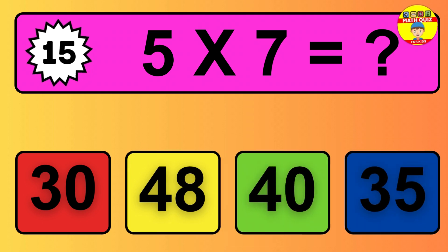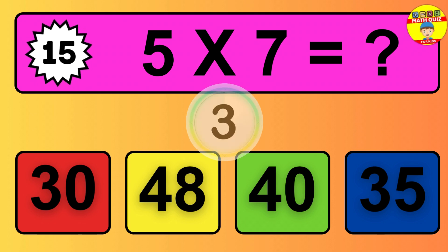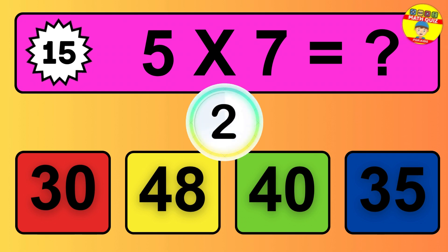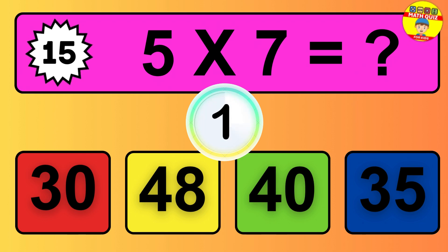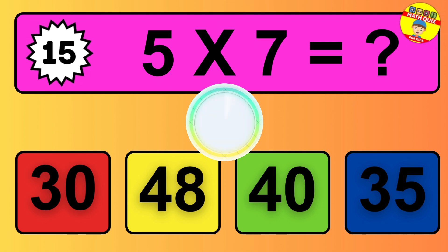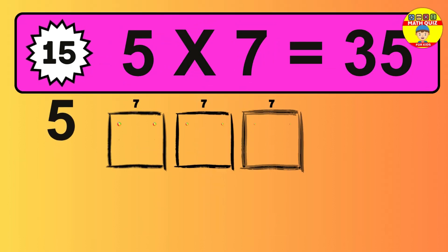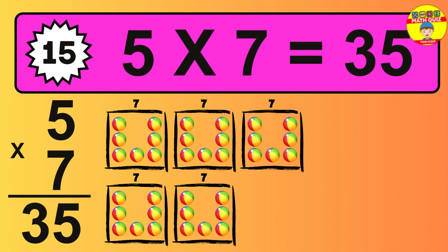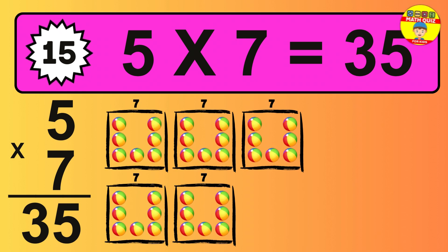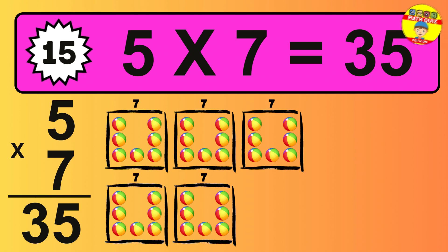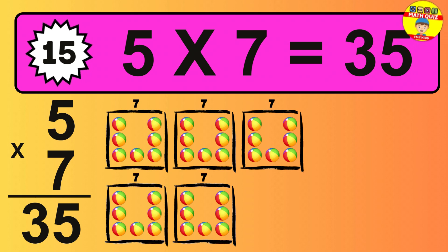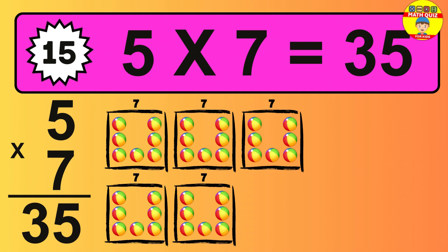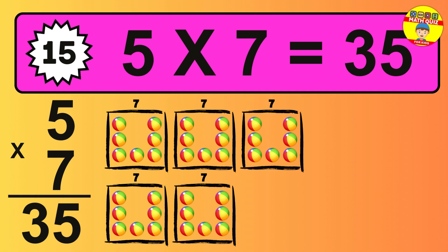Question 15. 5 times 7 equals what? The answer is 5 times 7 is 35. To calculate, we have 5 groups with 7 balls each one. So how many balls do we have? 35 balls.